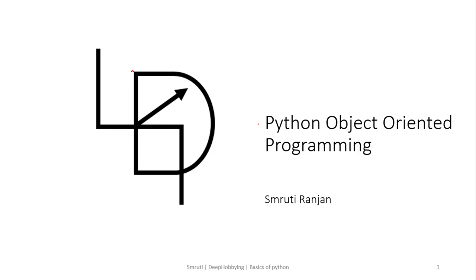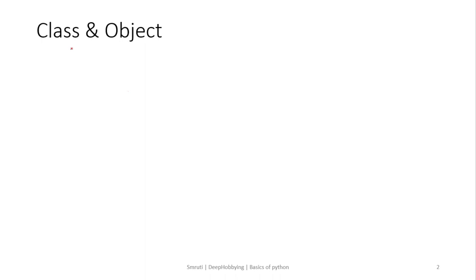OOP or object-oriented programming is not new — not only Python but many other advanced programming languages like C++, Java, and PHP use this concept. In object-oriented programming there are two concepts: class and object. A class is more like an abstraction, and an object is the real instance or real value under the class. To give you an example in layman's terms, let's say 'human' is an abstraction — it's a concept, that's why we call it a class. If I ask you to point me out 'the human,' you cannot do that.